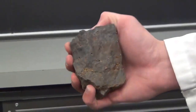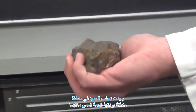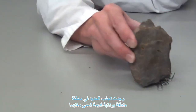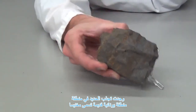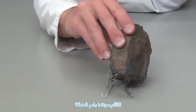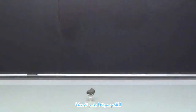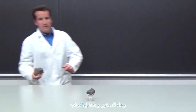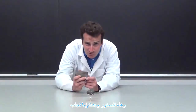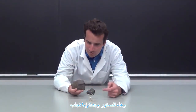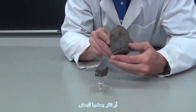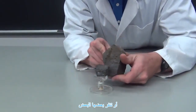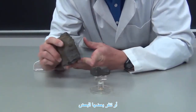Naturally occurring minerals were found to attract iron in the ancient Greek region of Magnesia, and so were aptly named for the area. And these rocks were found to either attract or repel one another.